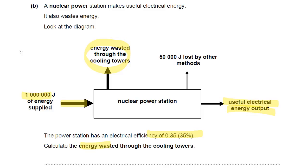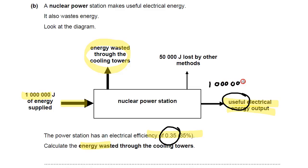Basically this 1 million joules is transferred into each of these three different types. We know 50,000 of them have gone to other methods, but we don't know how much is useful and we don't know how much is wasted through the cooling towers yet. So the first step is actually to calculate the useful. We do that using our efficiency: if it's an efficiency of 0.35 or 35%, it means 0.35 of 1 million is the useful. So we can do 1,000,000 × 0.35 — that gives us 350,000 joules.